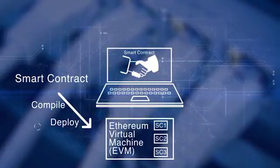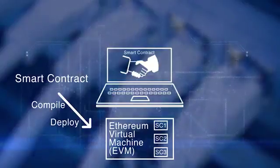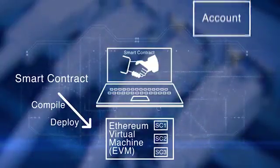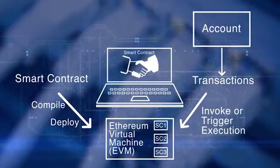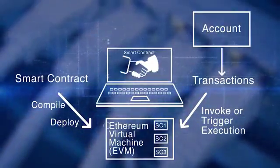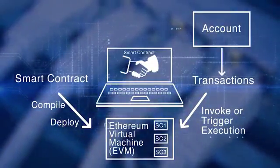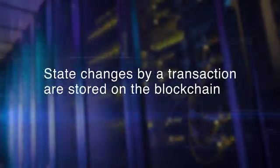When the target address in a transaction is a smart contract, the execution code corresponding to the smart contract is activated and executed on the EVM. The input needed for this execution is extracted from the payload field of the transaction. The current state of the smart contract is the values of the variables defined in it, and the state may be updated by this execution.